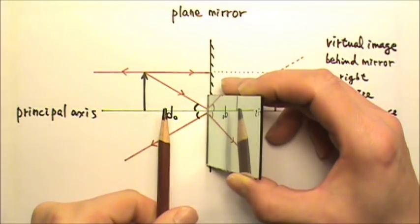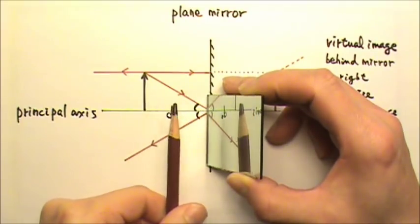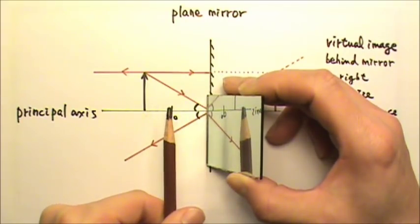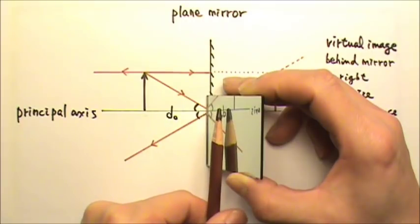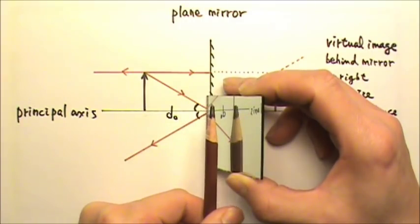Now think about your experience when you look into a plane mirror. Compare the images to the objects. Do the images look upright, same size as the object, and equal distance behind the mirror?